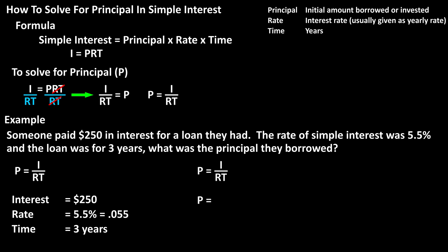So we have principal equals $250 divided by .055 times 3. .055 times 3 equals .165, and $250 divided by .165 equals $1,515.15 rounded off. So the principal or initial amount borrowed was $1,515.15.